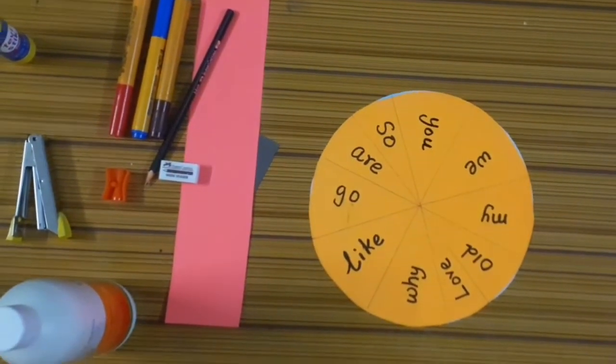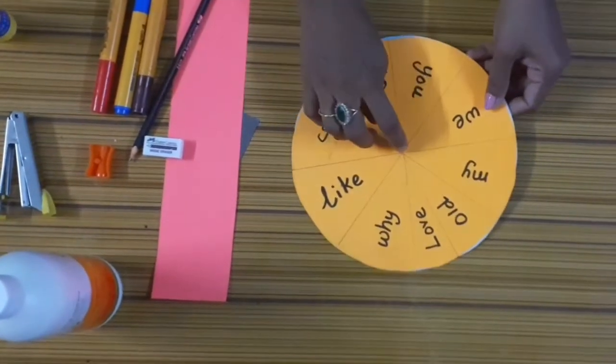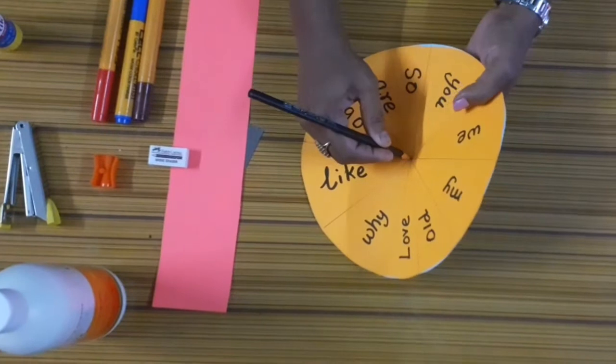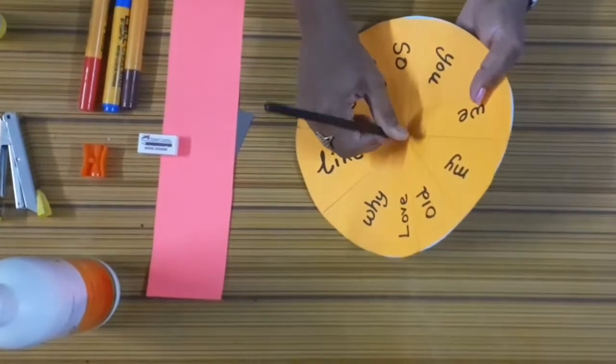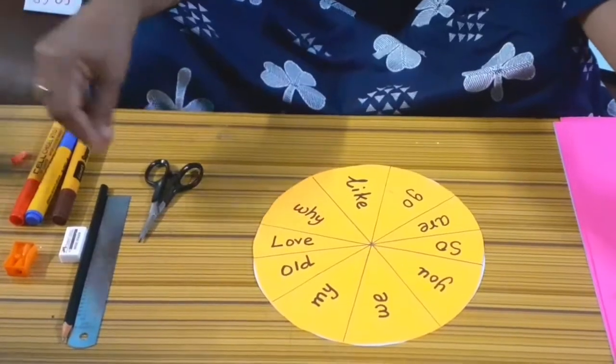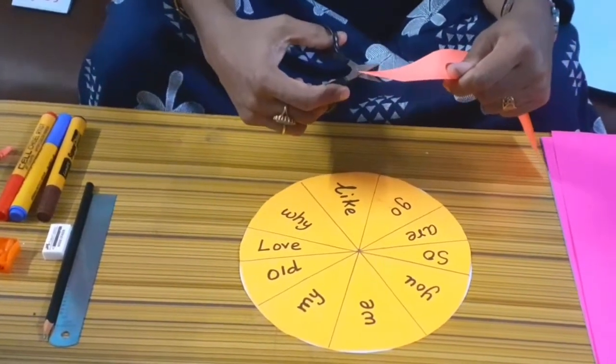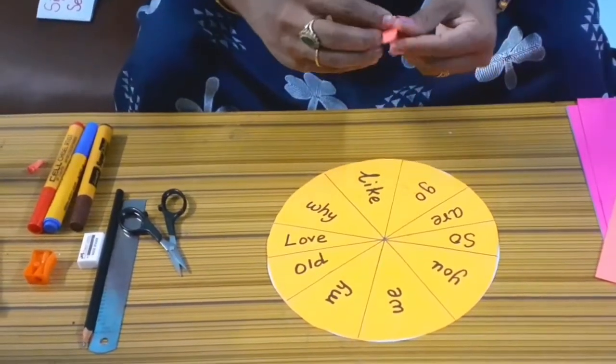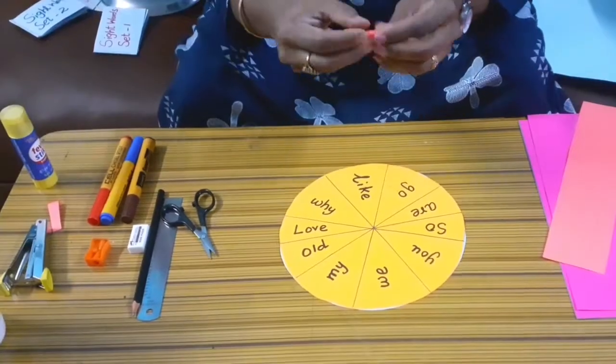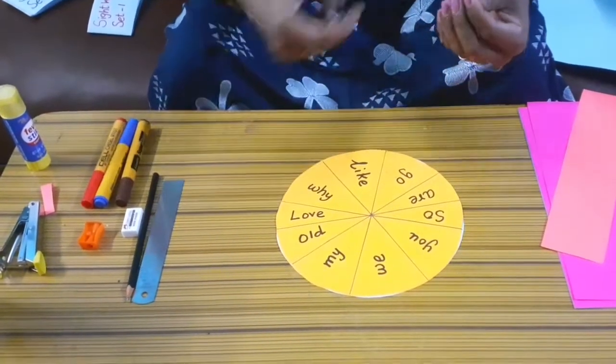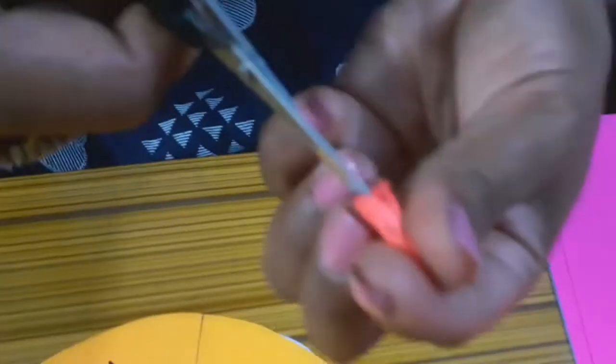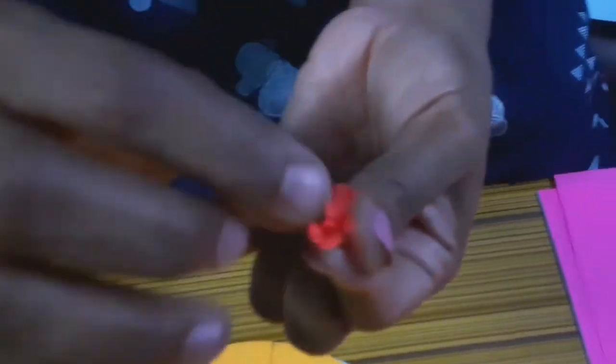Now we are going to make a small hole in the center. Get the help of your parents, please don't do it yourself. We're going to fix an arrow. For that we need a piece of paper. Take a small piece of paper, just roll it. Now use the scissors and cut at the bottom like this.